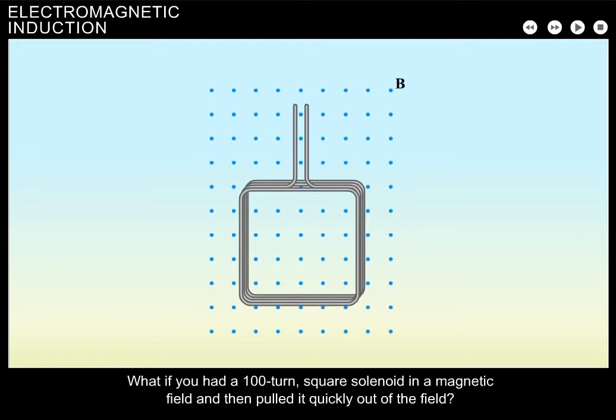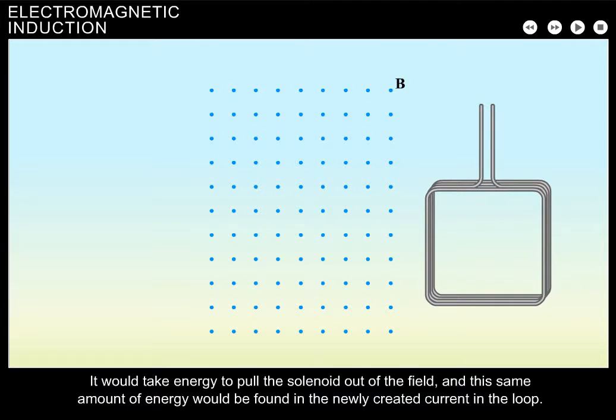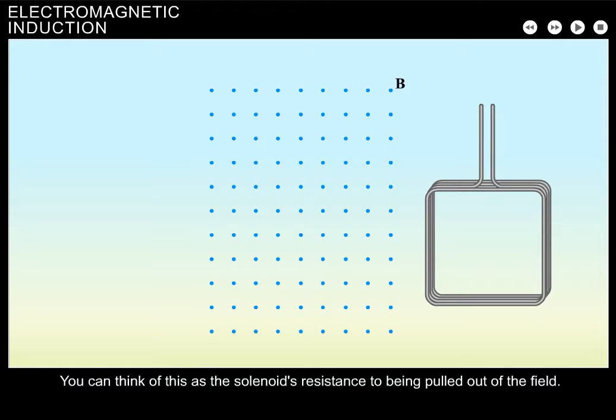What if you had a 100-turn square solenoid in a magnetic field and then pulled it quickly out of the field? It would take energy to pull the solenoid out of the field, and the same amount of energy would be found in the newly created current in the loop. You can think of this as the solenoid's resistance to being pulled out of the field.